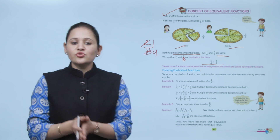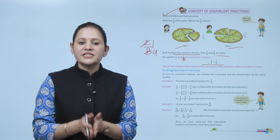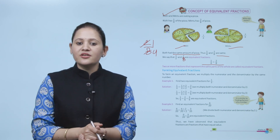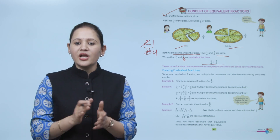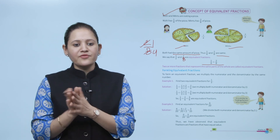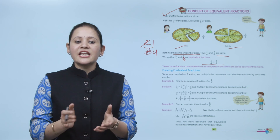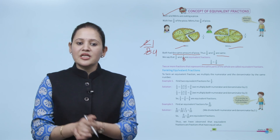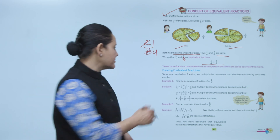Two or more fractions that represent the same part of the whole are called equivalent fractions. Next is forming equivalent fractions.